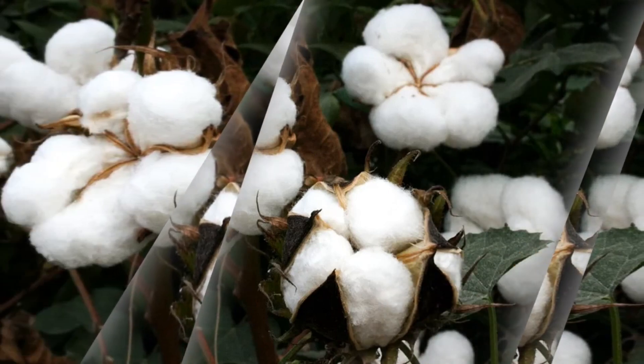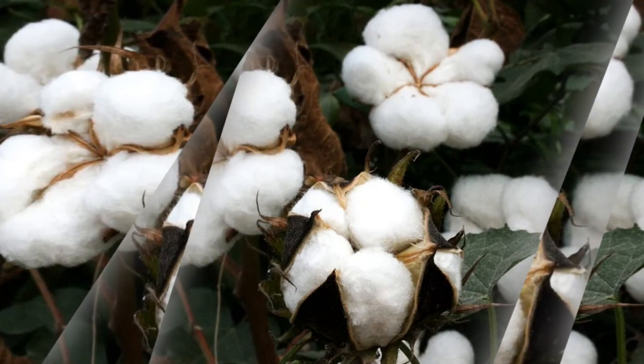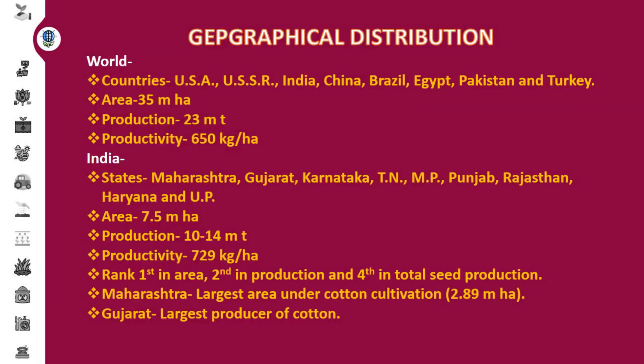Hello friends, today we are going to learn different cultivation practices of cotton. Cotton is also known as kappas. The botanical name of this crop is Gossypium species. It belongs to the family Malvaceae. The old origin of cotton was India and Africa. The new origin of cotton is Mexico and Central America.